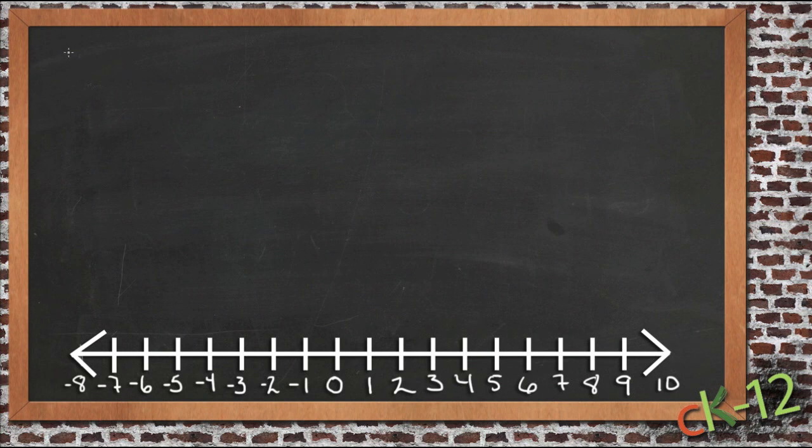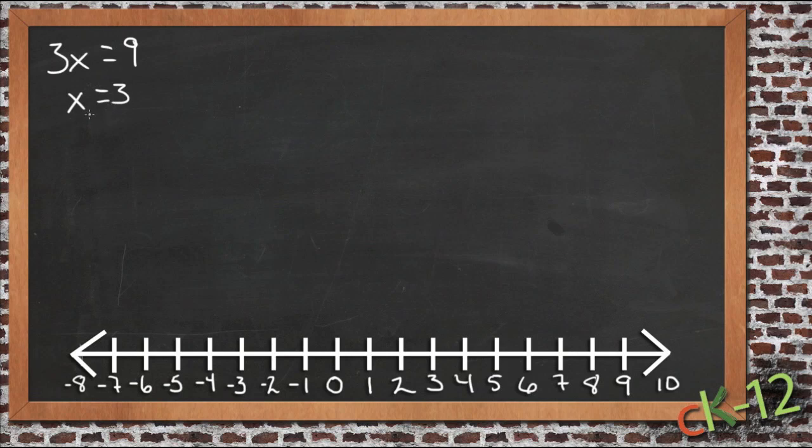Solving one-step inequalities really isn't any more difficult than solving one-step equations. By now you're pretty familiar with equations like 3x equals 9 where you just divide both sides by 3 and you get x equals 3. You've done a number of these.